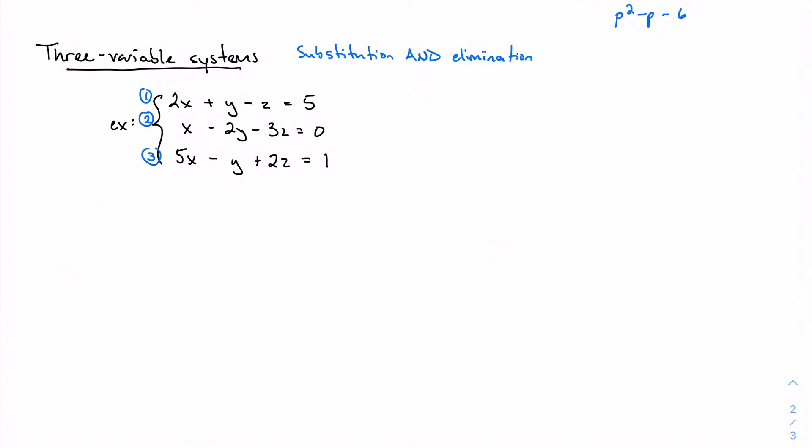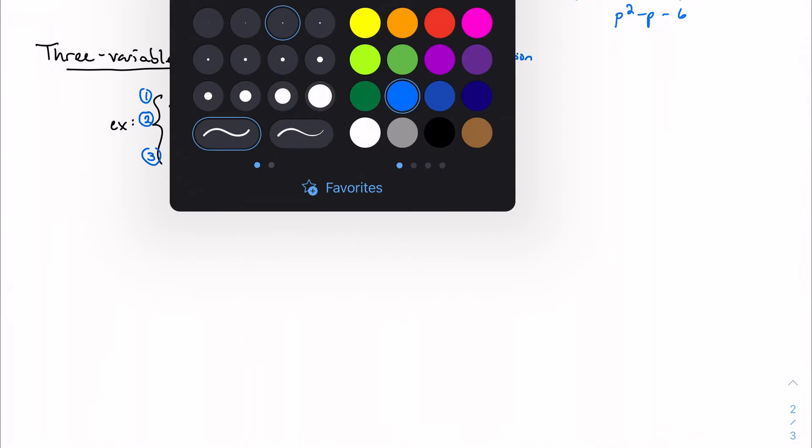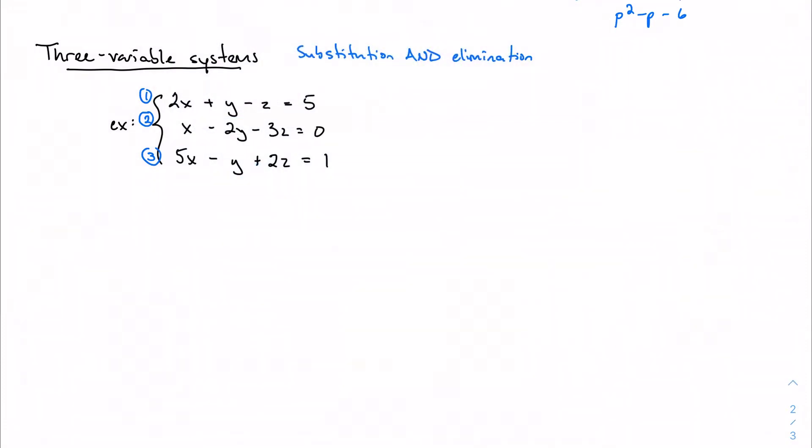Because I have three different equations that I'm juggling, I find it a lot easier to actually label them, so that way I can keep track. And our job the whole way is to kind of remove one variable at a time.